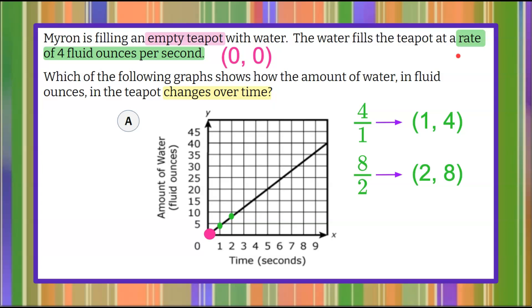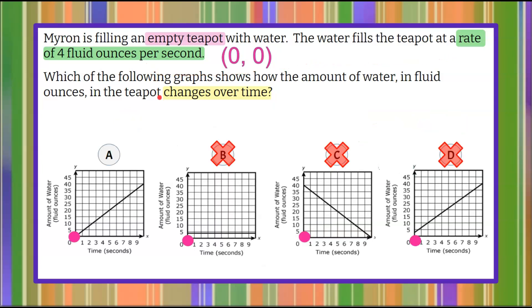So now using our unit rate and the idea that the pot is empty, I can go back to my question and with confidence say that graph A is the graph that represents this relationship.